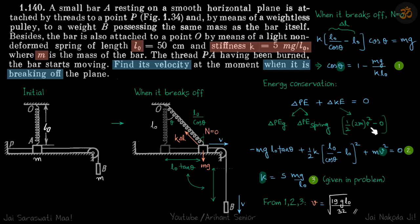So kinetic energy will be half 2m into v square, and potential energy due to gravity: it has fallen down, so potential energy will be negative, minus mg into this distance l0 tan theta.